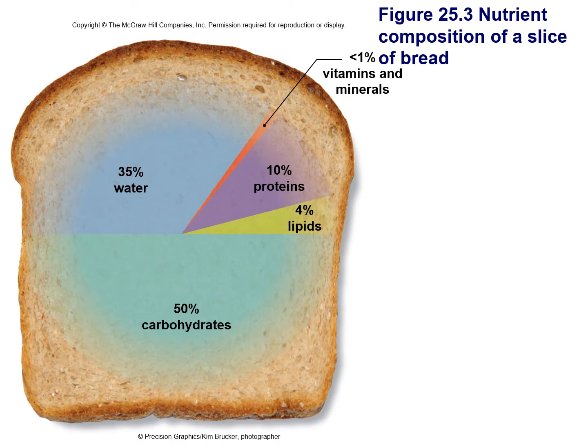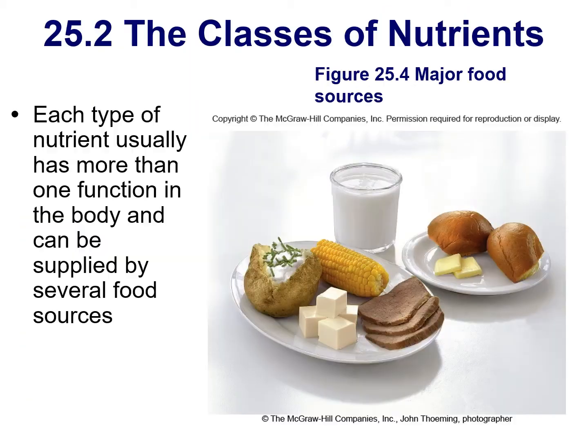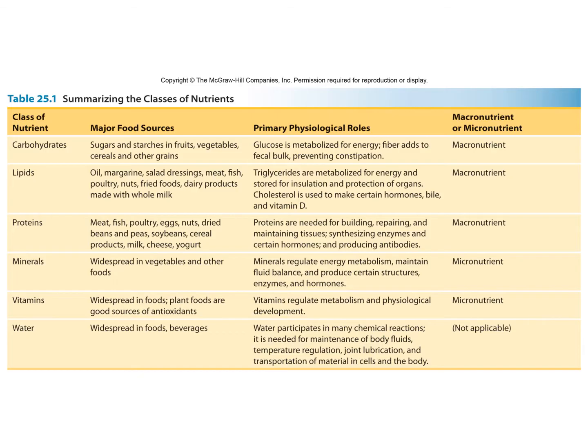For example, a piece of bread has mostly carbs, but it also has water, proteins, lipids, and tiny micronutrients like calcium. So the big thing we think of is not the only thing inside our food. When classifying nutrients, the main groups are carbs, lipids, proteins, minerals, vitamins, and water.